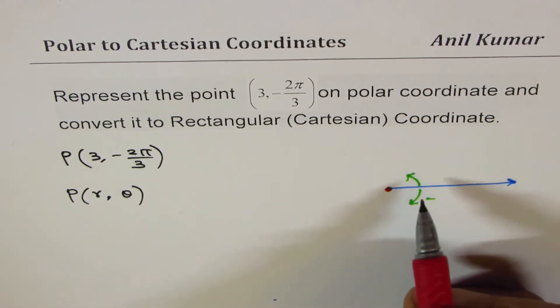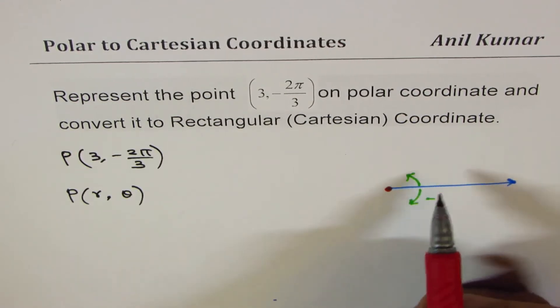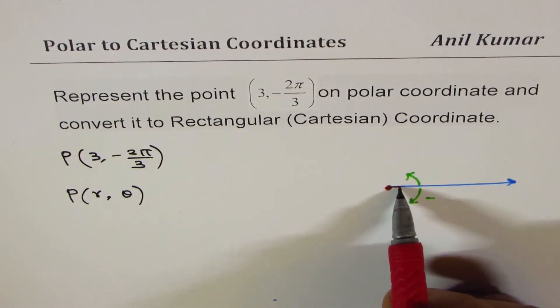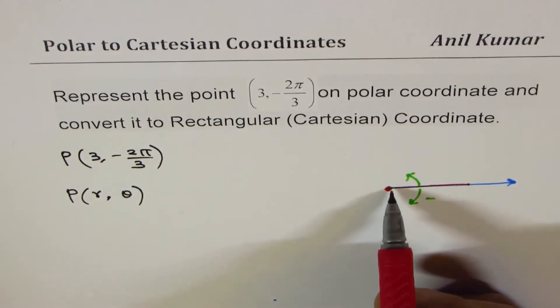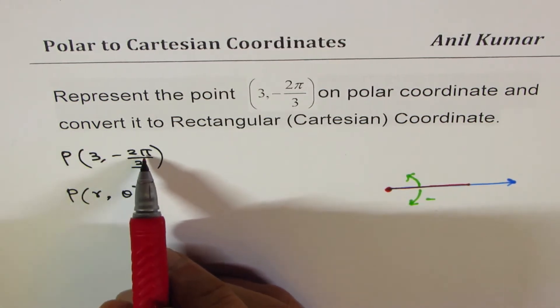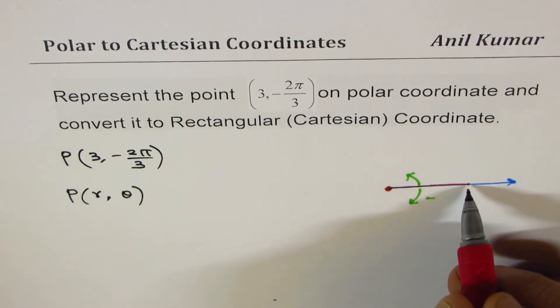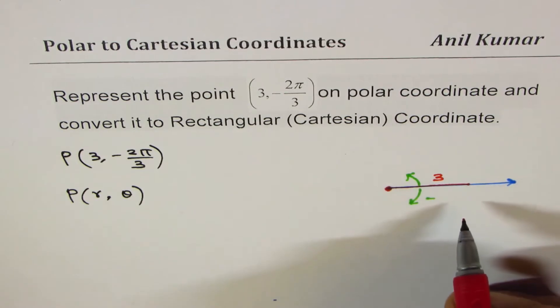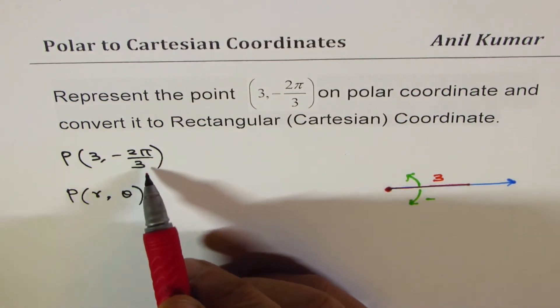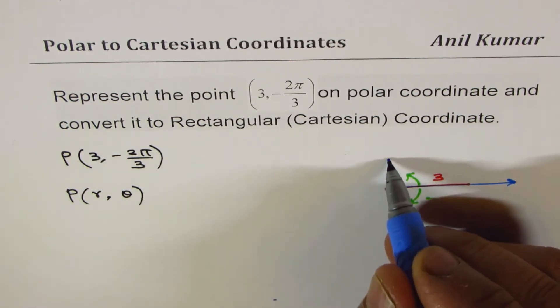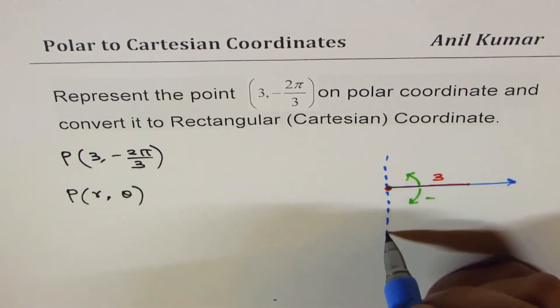The magnitude 3 will be represented by the length of the arm. So initially, the arm is along the positive x-axis. The length of this arm will be 3 if we are locating the point (3, -2π/3). So that becomes the length of the arm, 3 units.